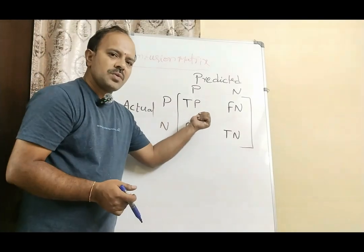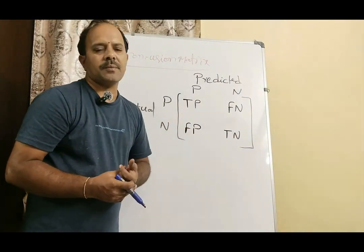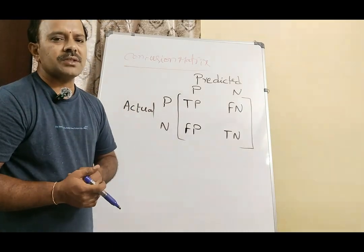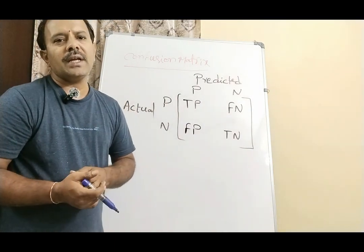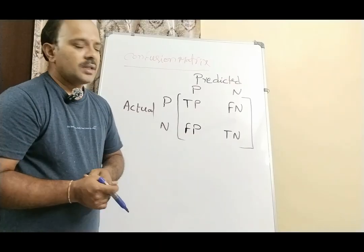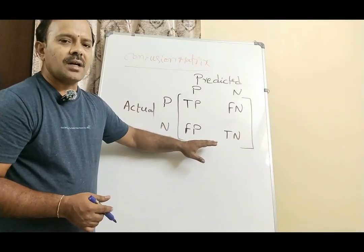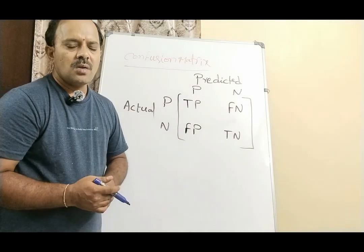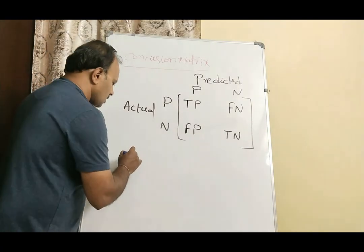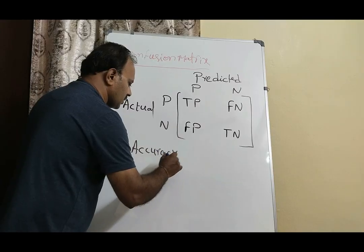The four entries are: true positive, false negative, false positive, and true negative. This is a very useful performance tool when working with a classification problem. There are many parameters you can measure or obtain from this matrix — one such parameter is accuracy.